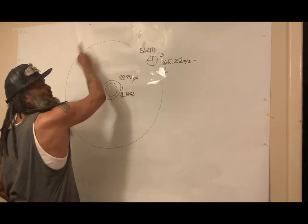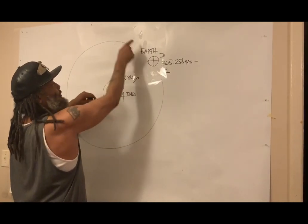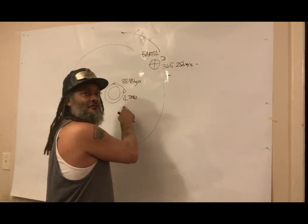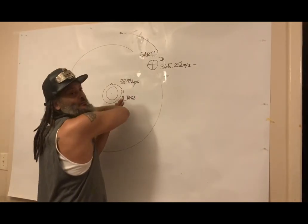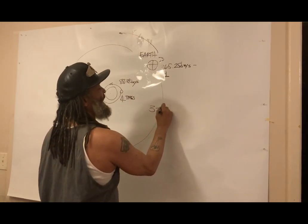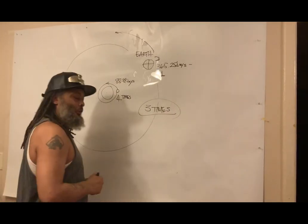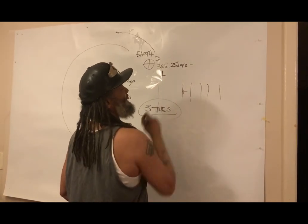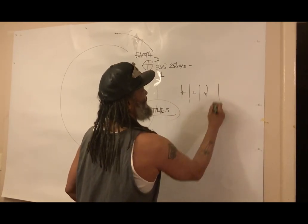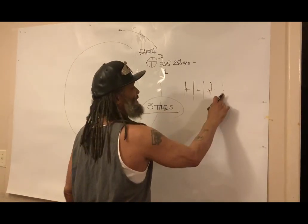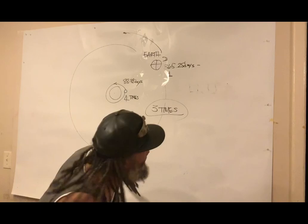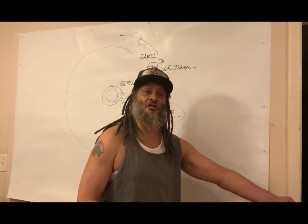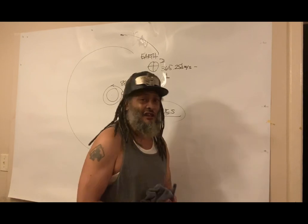Mercury goes around four times, but because the Earth is also moving around the sun, one of those four passes is lost in Earth's advancement. So we really see the Mercury retrograde three times a year. When we see it four times a year, it's at the very beginning and very end of that year period. That's just one way the apparent motion of our solar system reflects a cycle in our own physiology.